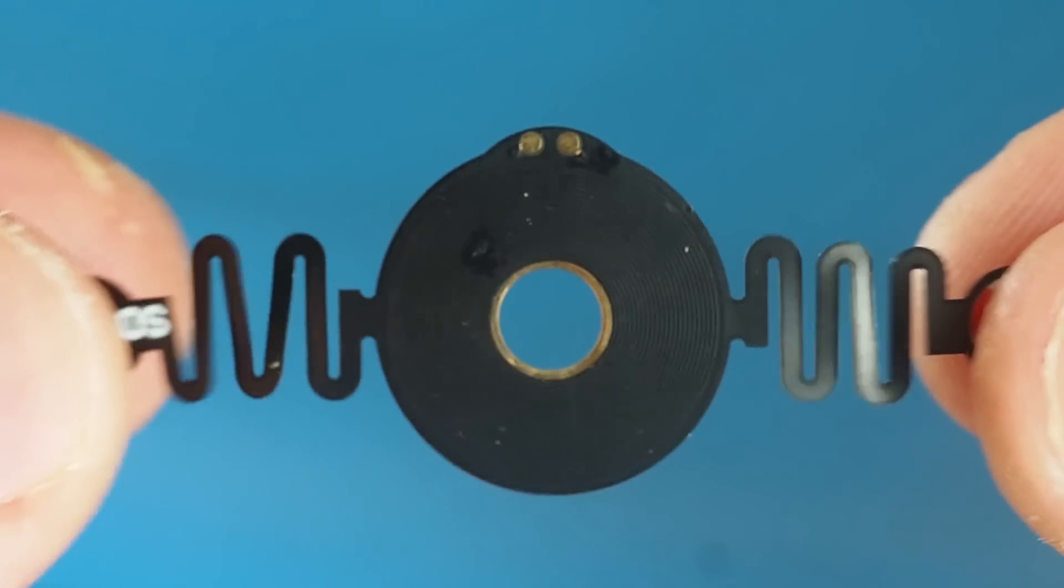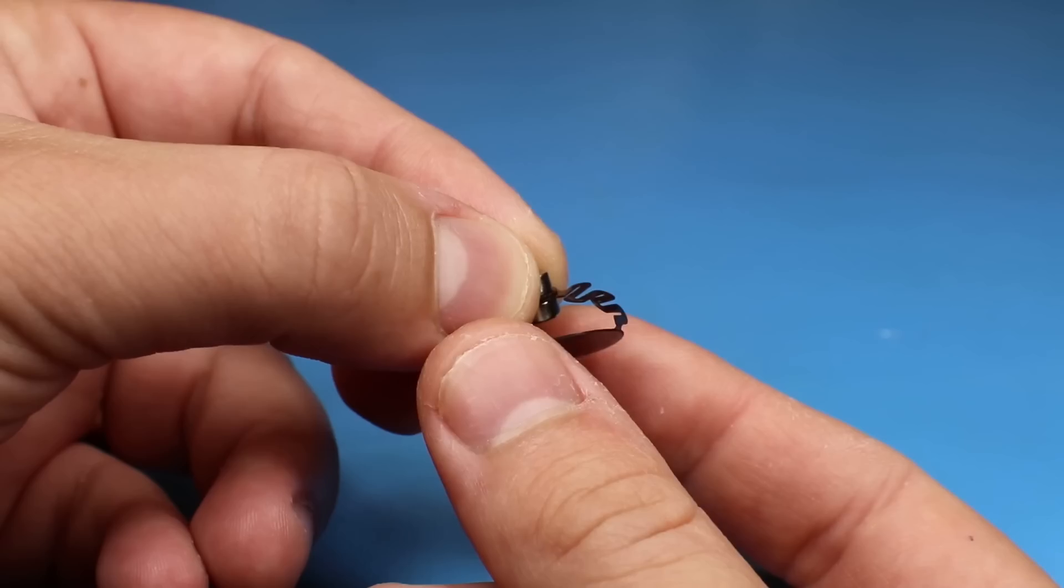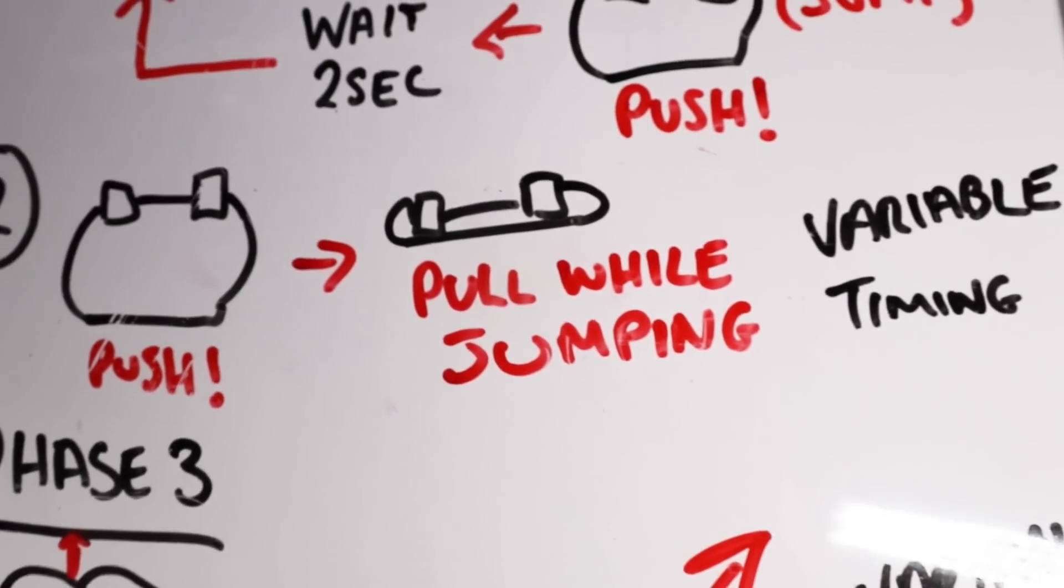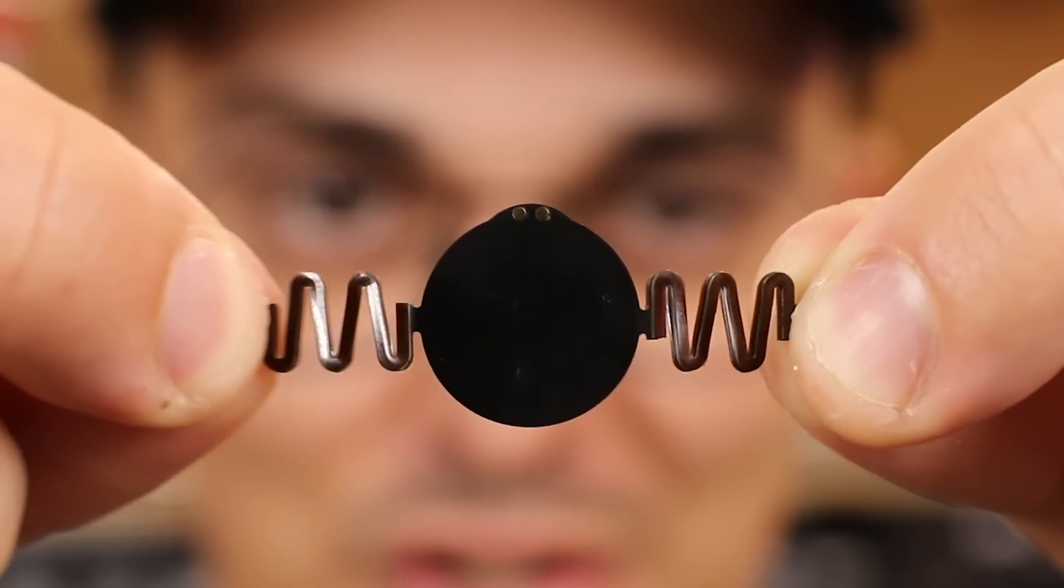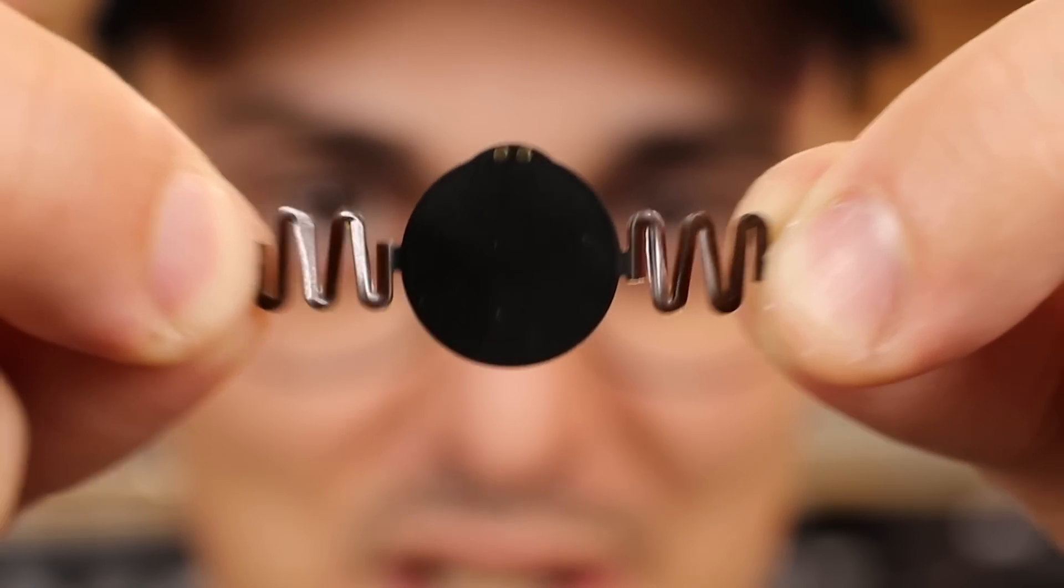My last hope was the zigzag PCB spring. This was suggested by some of my viewers in the previous two videos. Its concept is that during the jump it will help the coil reach the magnet quicker, which will then extend the jumping height. In version 2 I applied a similar concept with software, so I'm very curious to see what will happen with this PCB spring.